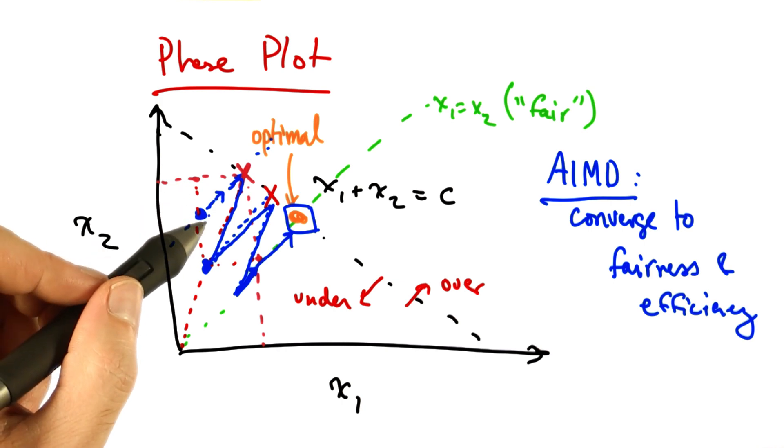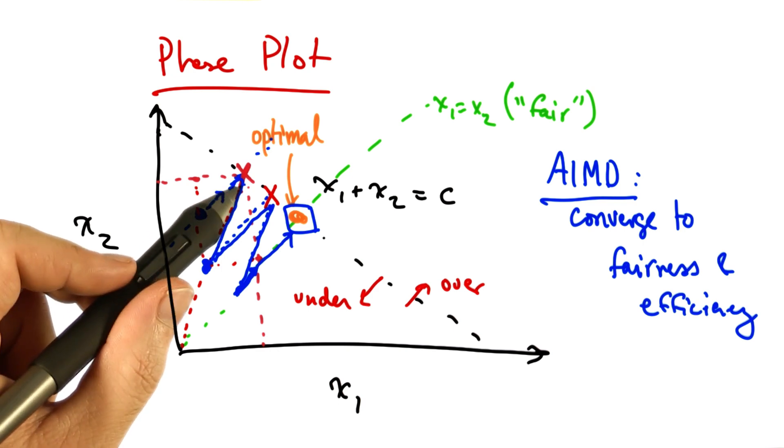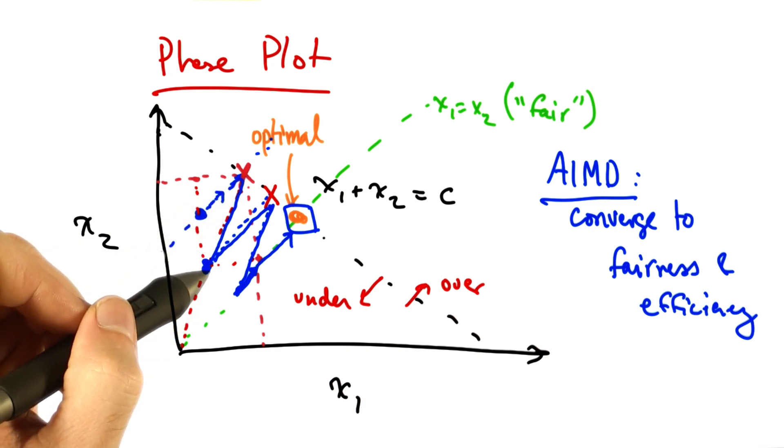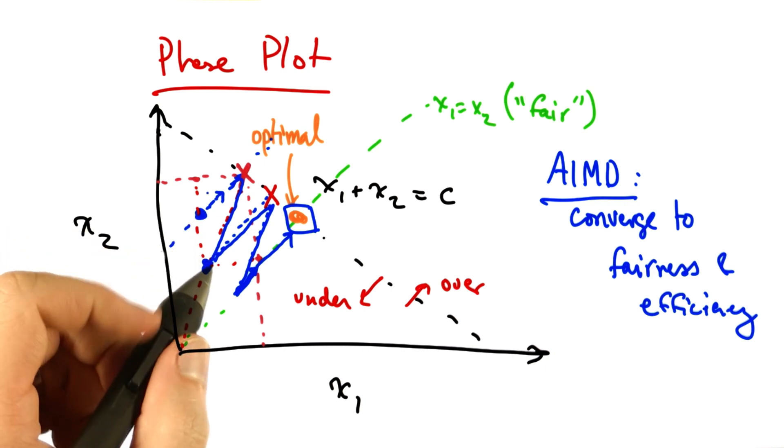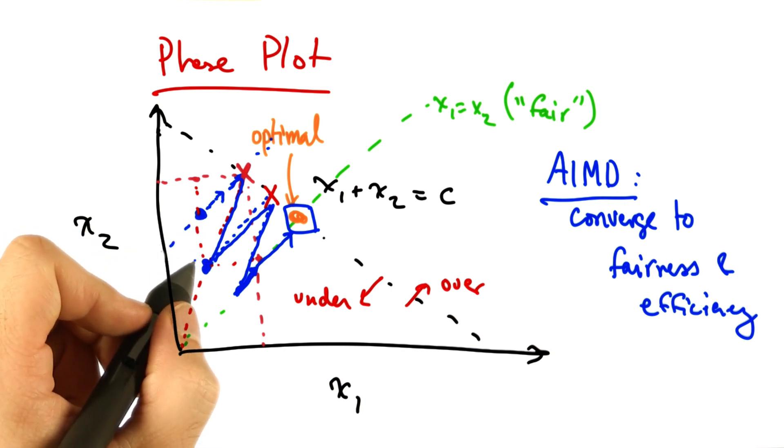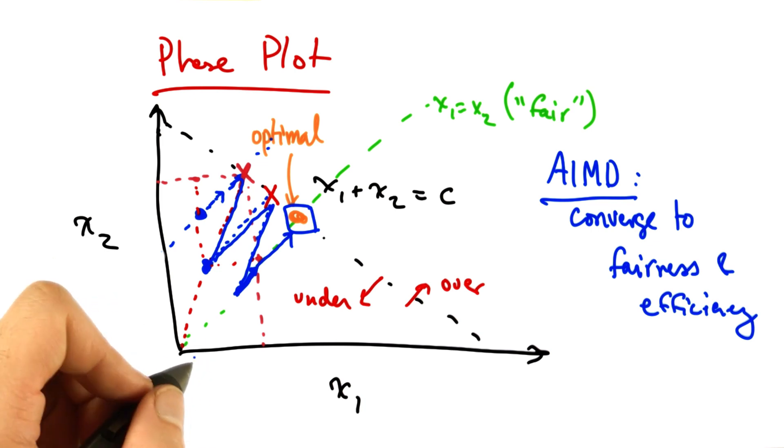To think about this a bit more, you can see that every time additive increase is applied, that increases efficiency. Every time multiplicative decrease is applied, that improves fairness, because every time we apply multiplicative decrease, we get closer to this x1 equals x2 line.